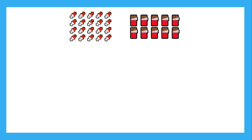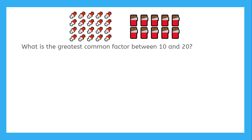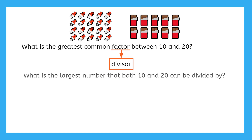So Sam's candy question is really asking: what is the greatest common factor between 10 and 20? Well, the word factor really just means divisor. So what we're really asking is: what is the largest number that both 10 and 20 can be divided by?